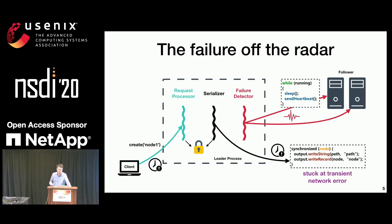So what's the problem here? In this case, the serializer inside the leader process gets stuck when dumping a snapshot to another instance due to a transient network error. However, the serializer still holds the log, so in turn it blocks the request processor module. Since the failure detector is not affected, it still keeps sending heartbeats to other processes. Thus, this process still appears to be working.